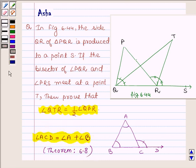So this is the key idea we are going to use in this problem to prove that angle QTR is equal to half of angle QPR.